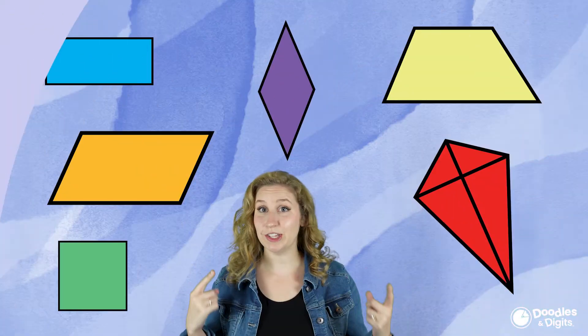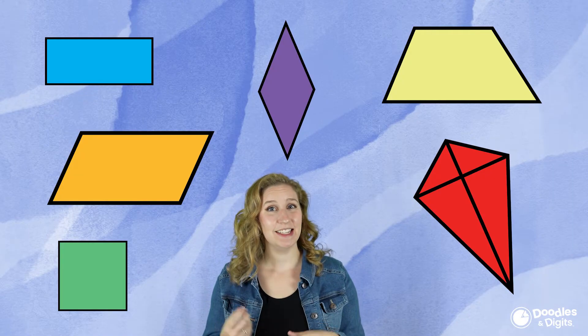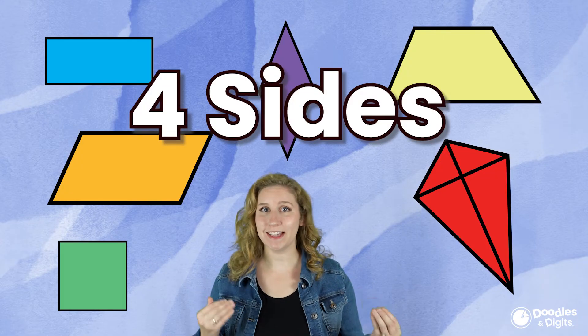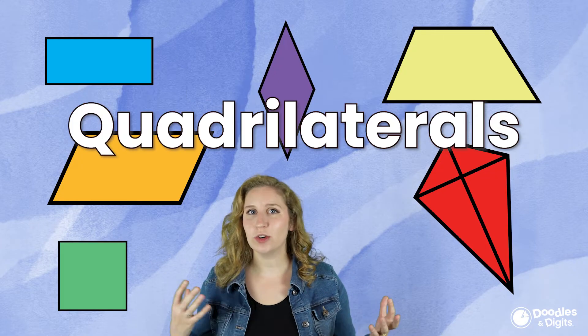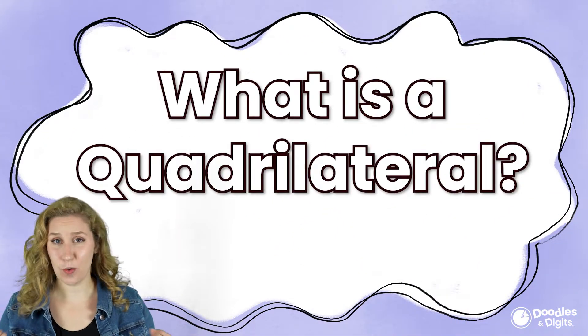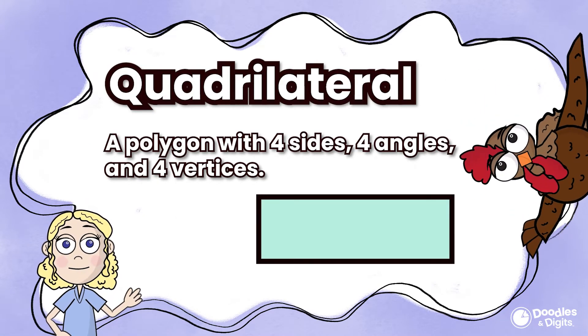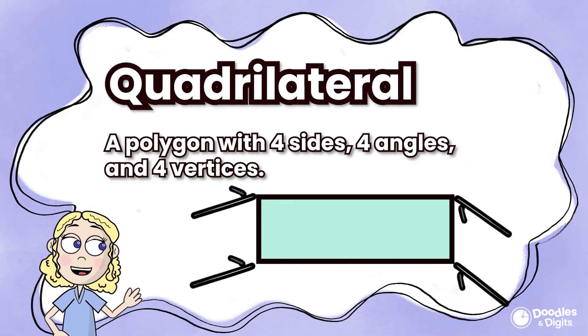Look at these shapes on the screen. These are all considered quadrilaterals. What do you notice? What do you wonder? What's the same about them and what's different? You might notice that all of these shapes have four sides. If you even look at the word quadrilateral, quad means four. So what is a quadrilateral? A quadrilateral is a polygon with four sides, four angles, and four vertices.